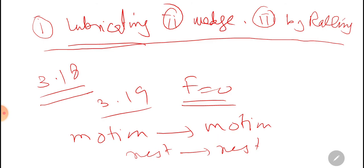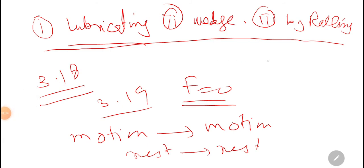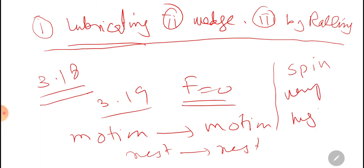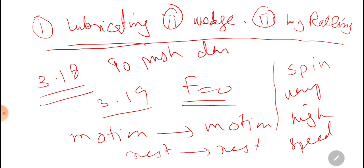Why is the spinner of a washing machine made to spin at very high speed? When it spins at very high speed, it will push the denser particles away from the axis of rotation.